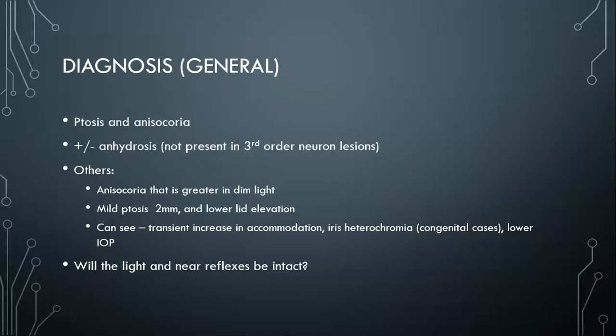Moving to diagnosis: you become concerned about Horner syndrome when you recognize ptosis — seeing a little less of the eye with eyelid droopiness — and anisocoria, a difference in pupil size. You may or may not see anhidrosis, and we noted it's not present in third-order lesions because of where the vasomotor sympathetics branch off, before the third-order neuron.